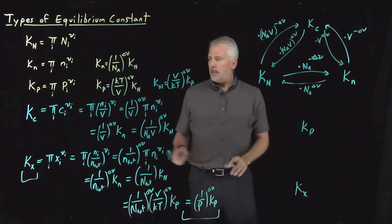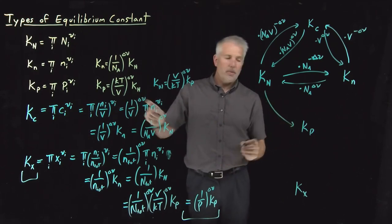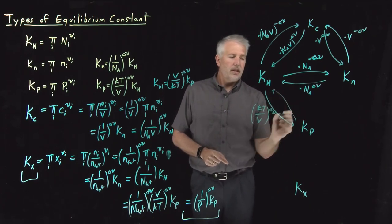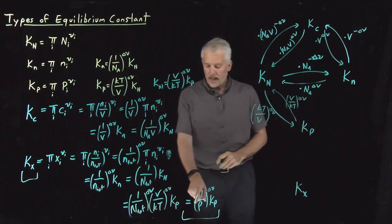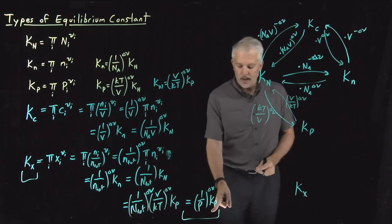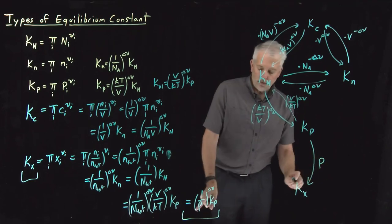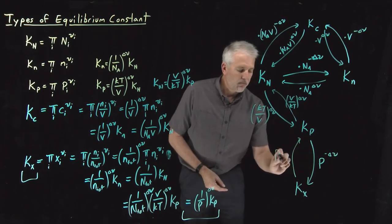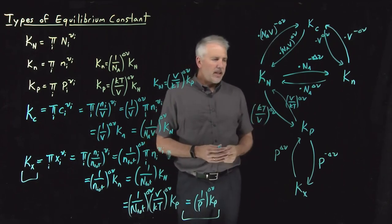To get from KN to Kp, multiply by (kT/V)^Δν; in the reverse direction multiply by (V/kT)^Δν. Finally, to get from Kp to Kx, multiply by (1/P)^Δν, i.e., pressure to the negative Δν; in the reverse direction multiply by pressure to the positive Δν.